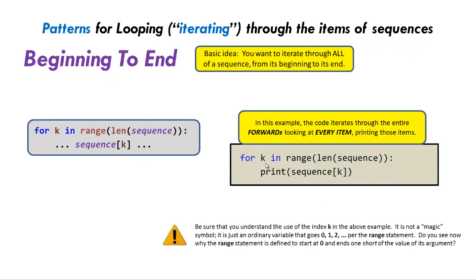Here's an example. We have a loop k that goes through range of length of sequence and just prints the items in the sequence. Be sure that you understand the use of the variable k in this example. It's not magic at all. It's just a regular variable that goes 0 through whatever per the range statement.